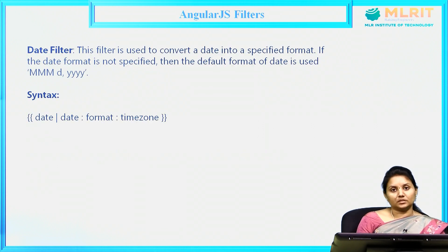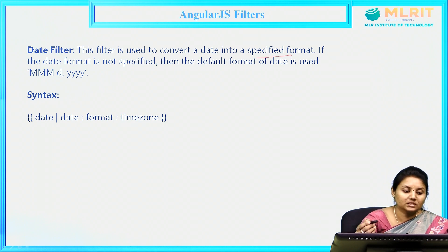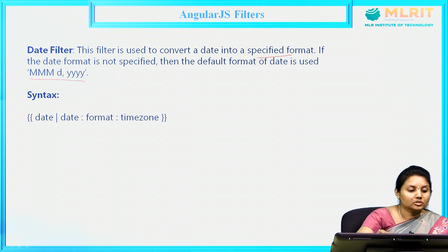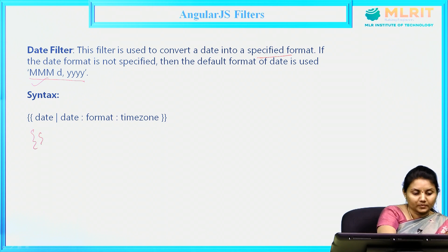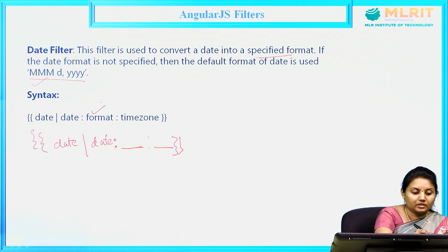Now the date filter. This filter is used to convert a date into a specified format. If the date format is not specified, then the default date format is used. The syntax is the same — double braces, then 'date', pipe symbol, then the date filter name, colon for the format in double quotes, and colon again for timezone. So we can specify date format and timezone.